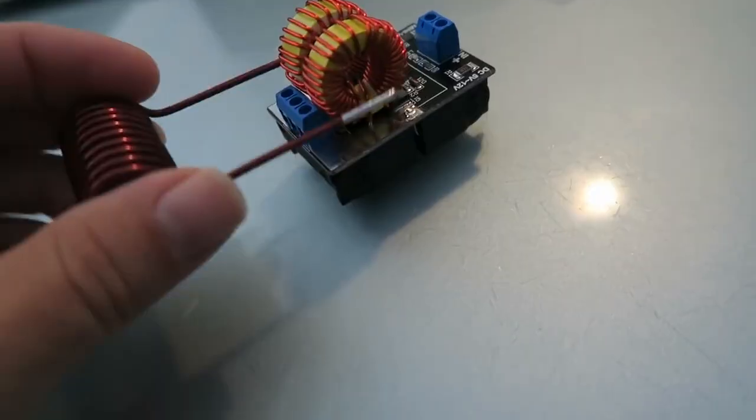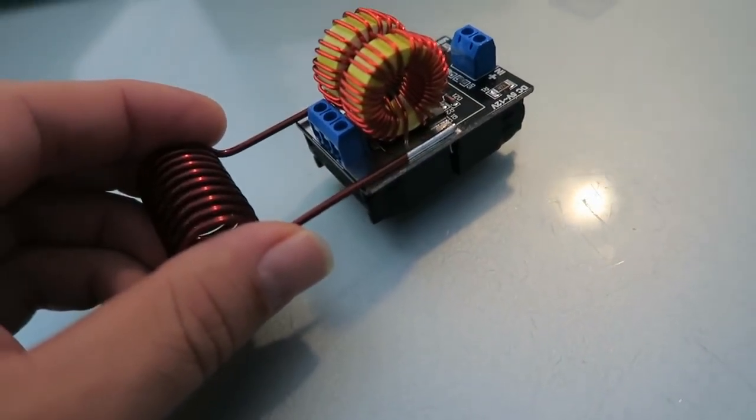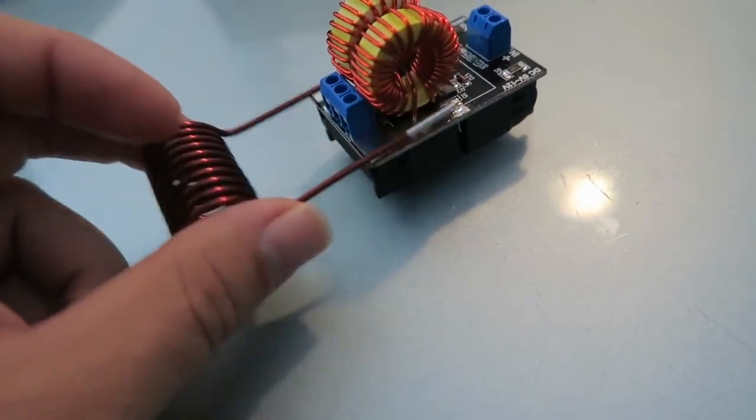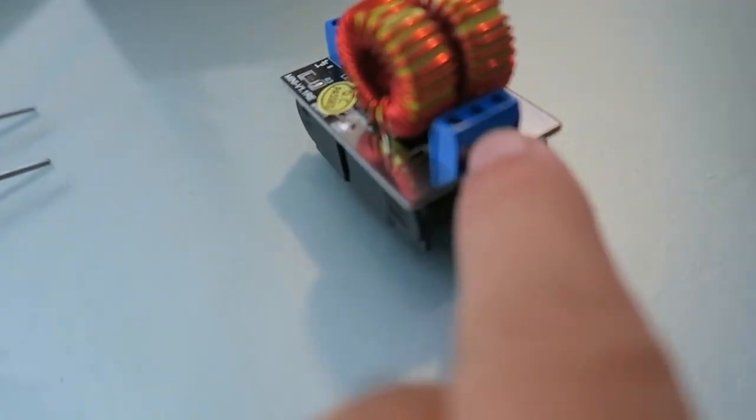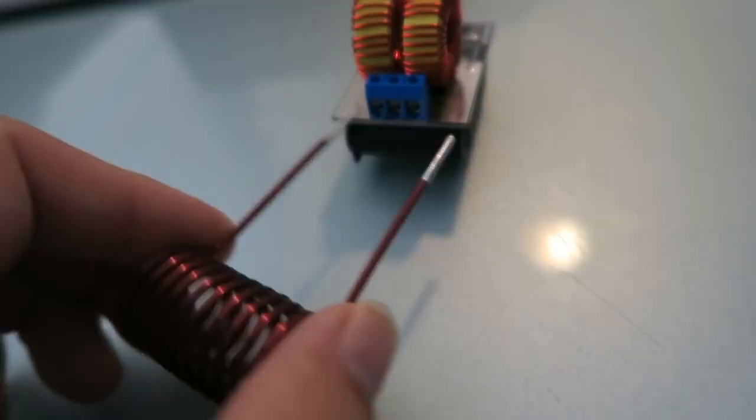So this coil here solders onto here like this. We're going to have to break out the soldering iron and solder this up. I think the outputs are over here too. You could connect it to there but you'd have to bend it. I guess you could fit in there somehow.